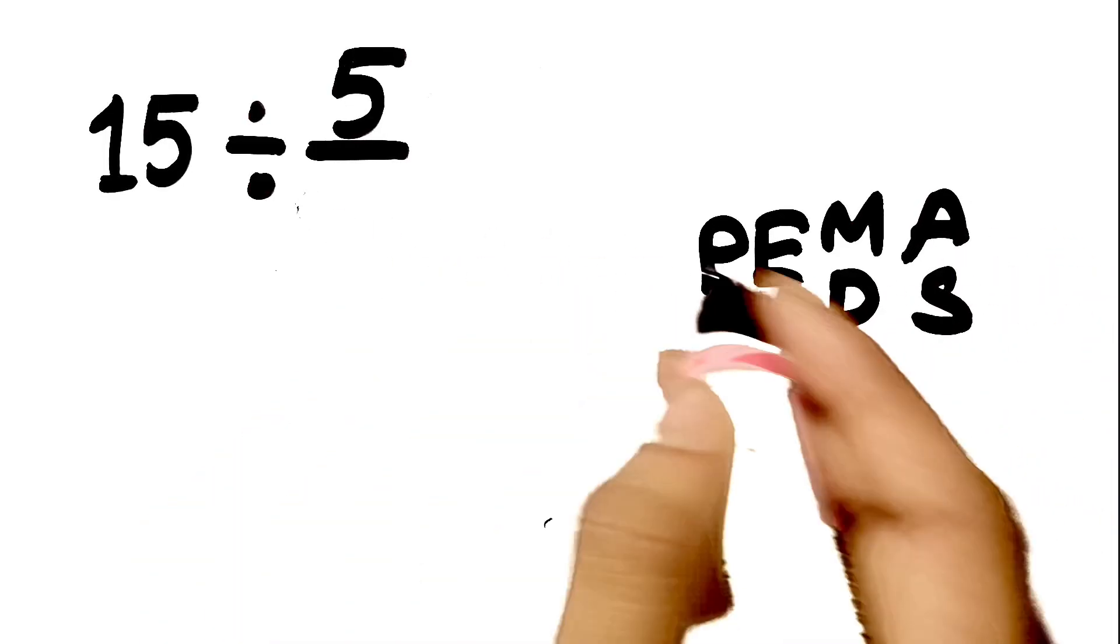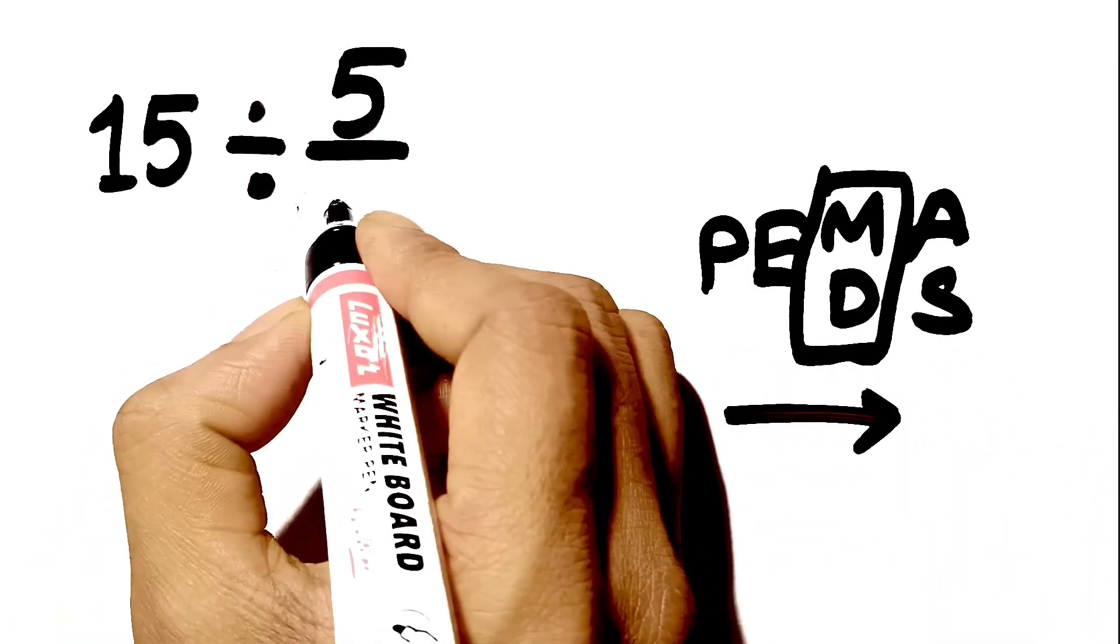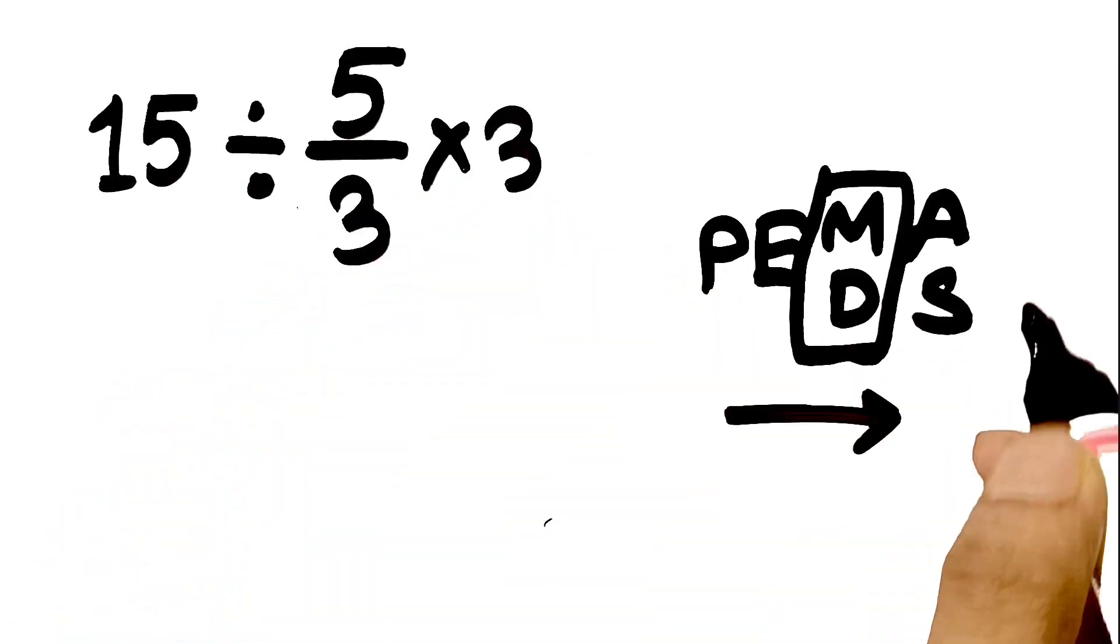Remember that multiplication and division have equal priority, and we have to work from left to right, and the same applies to addition and subtraction.